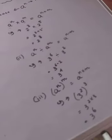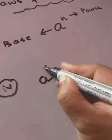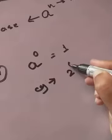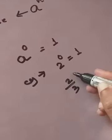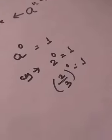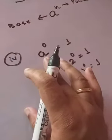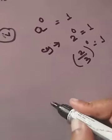The next law: if any base is carrying a power of zero, the answer is always one. For example, two to the power zero equals one. Even a fraction like two-thirds to the power zero equals one. Any base with power zero always gives one.